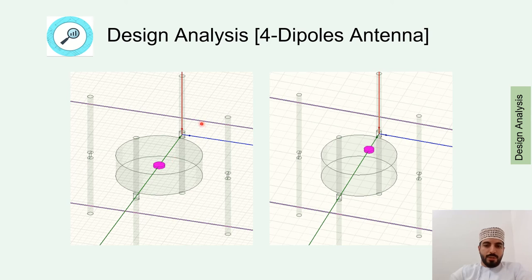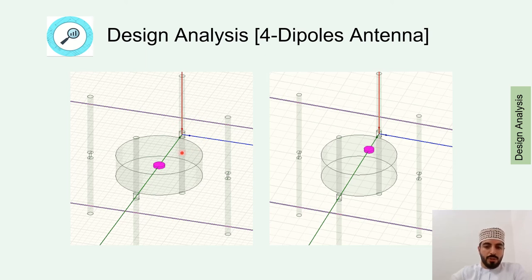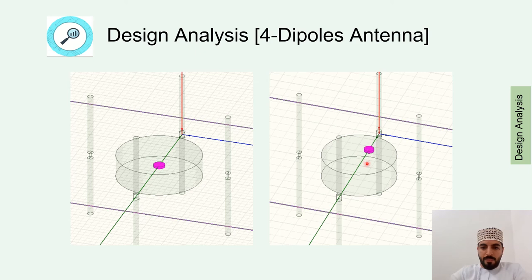Now we will discuss the second design: the four-dipole antenna. The design contains dipole 1, dipole 2, dipole 3, and dipole 4 respectively. The order is very important for obtaining the correct transmission coefficients in the simulation. We also include the palm tree and the red palm weevil placed at the center and at the edge of the palm tree.